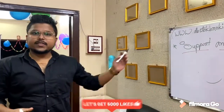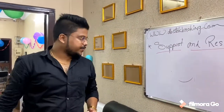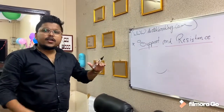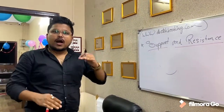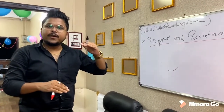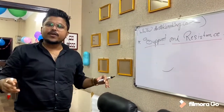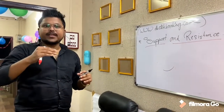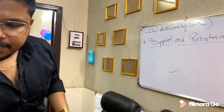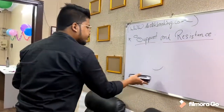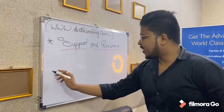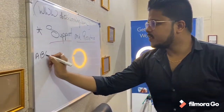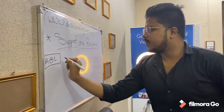So what is support and what is resistance? It is the two levels — up levels and down levels — of a particular graph, or you can say a particular company's trading. Let's take one example: let's say A, B, C is a company.